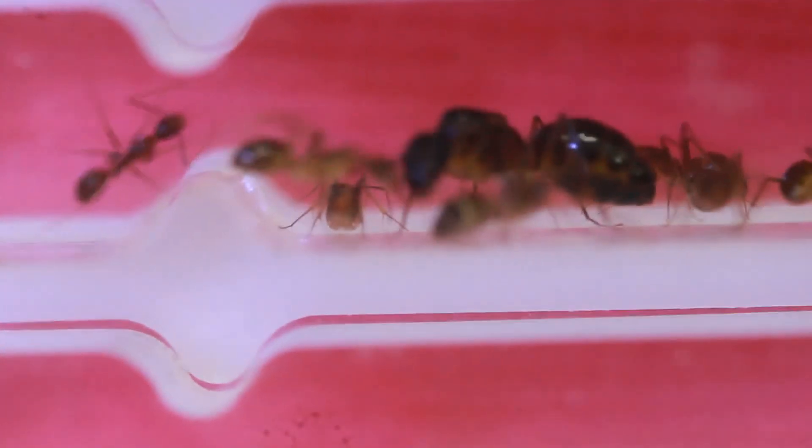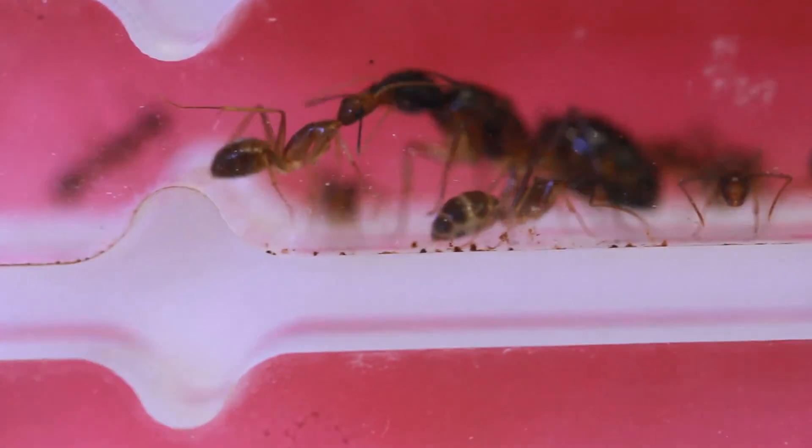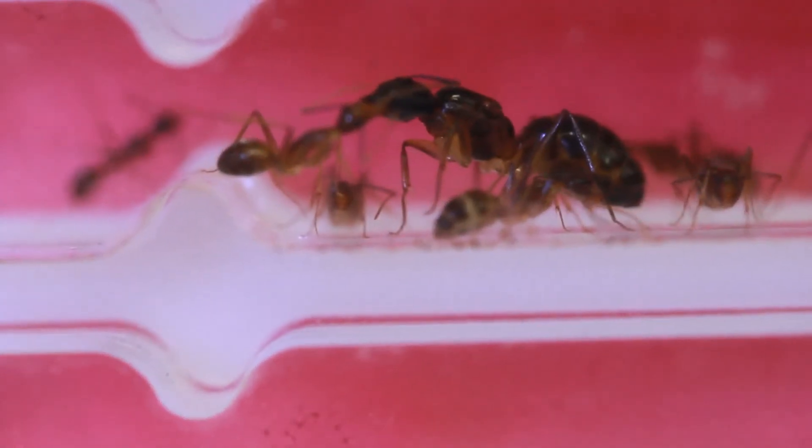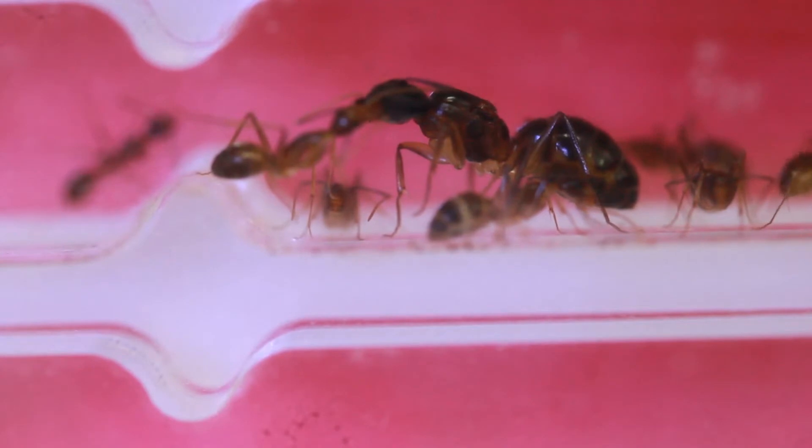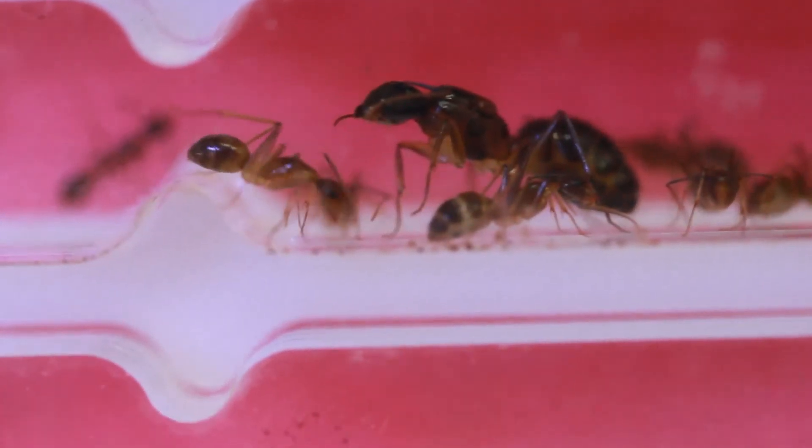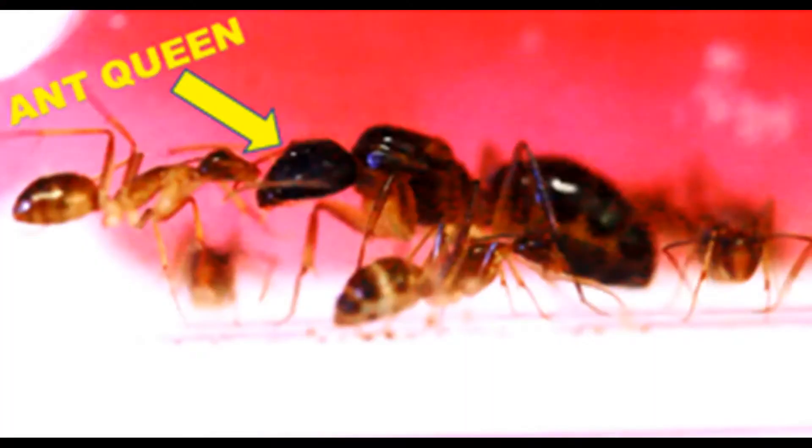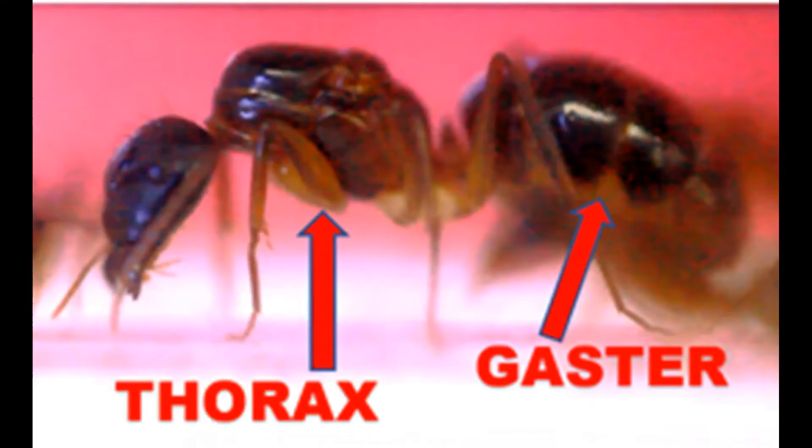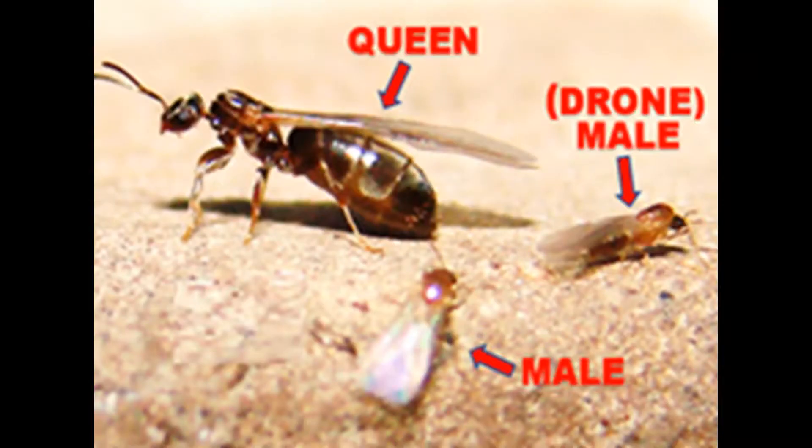This is another example of a queen, a Camponotus Irritans queen. You can see the queen is large compared to the workers. They have three parts of the body: the head, then the thorax is the middle part, and the back part is called the abdomen or gaster. The thorax is usually larger and the gaster also larger than the rest of the colony.